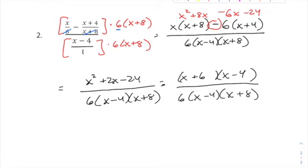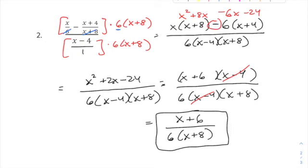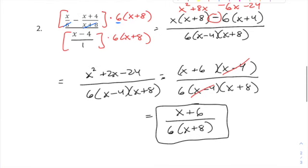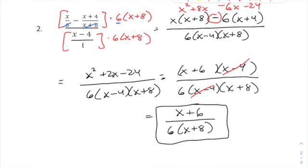Now factor the new numerator x² plus 2x minus 24: what multiplies to negative 24 and adds to positive 2? That's positive 6 and negative 4, giving (x plus 6)(x minus 4). We get a common factor: (x minus 4) cancels with (x minus 4) in the denominator, leaving (x plus 6) over 6(x plus 8). Be careful — do not cancel the 6 with the 6 in (x plus 6); that 6 is a term, not a factor.